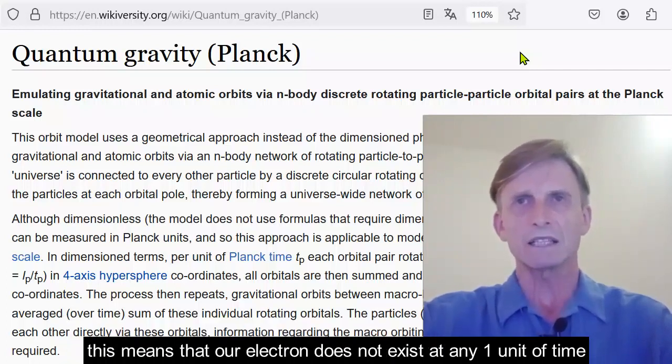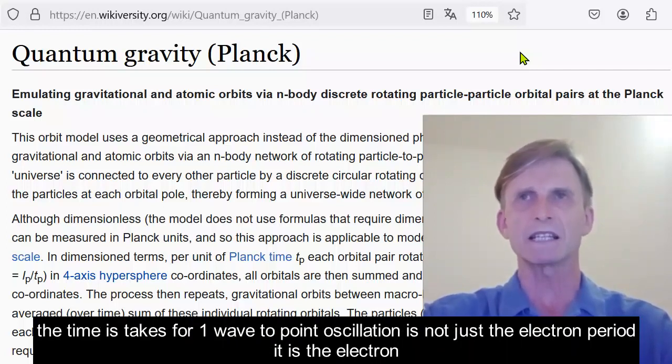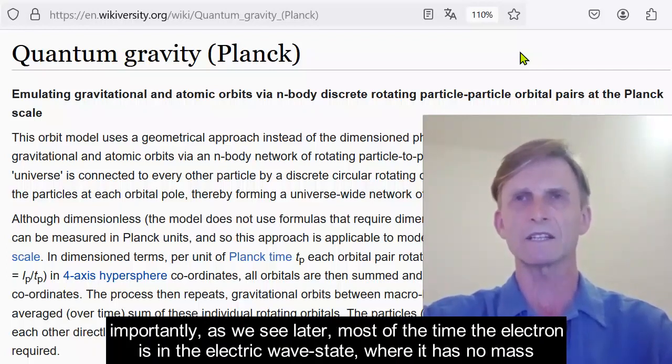Now, this means that our electron does not exist at any one unit of time, but rather the electron is an event that is spread over time. The time it takes for one wave-to-point oscillation is not just the electron period, it is the electron. Importantly, as we see later, most of the time the electron is in the electron wave state, where it has no mass.